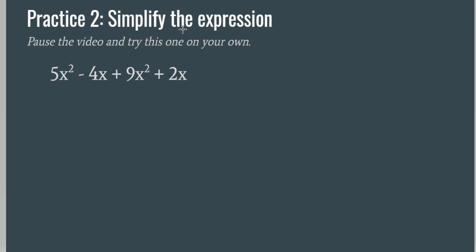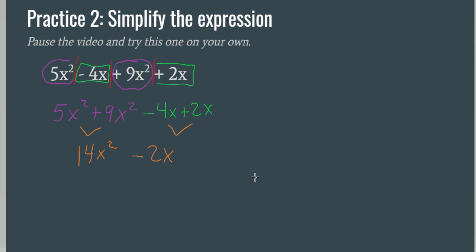Practice number two — simplify the expression. We separated the terms, found like terms, and my final answer was 14x squared minus 2x. If your answer does not look like mine, go back and check your work and correct your errors.